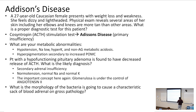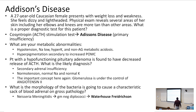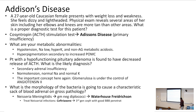What is the morphology of the bacteria that causes characteristic sac-of-blood adrenals on gross pathology? Watch for the patient who goes into shock because of primary adrenal insufficiency or adrenal hemorrhage. When talking about Neisserial infections, you're going to use ceftriaxone — a third-generation cephalosporin with good blood-brain barrier penetration, so it can be used for meningitis as well.